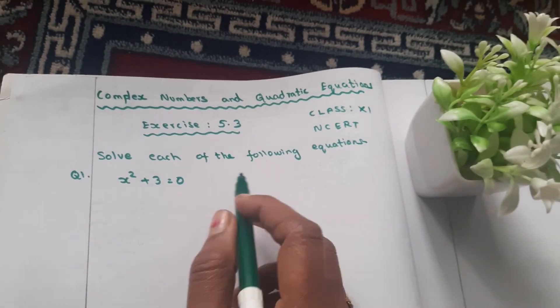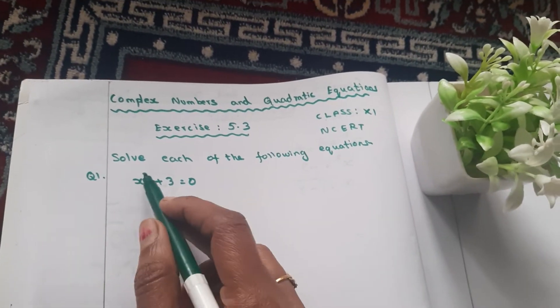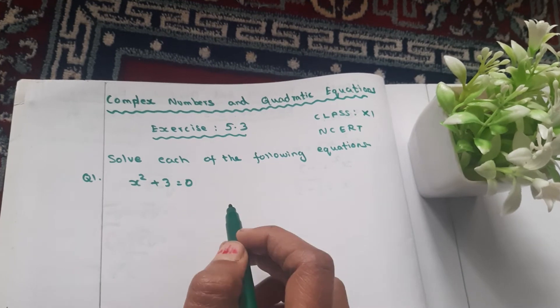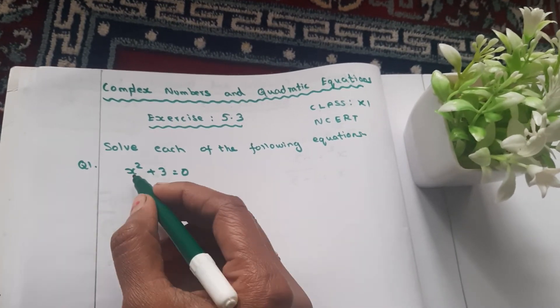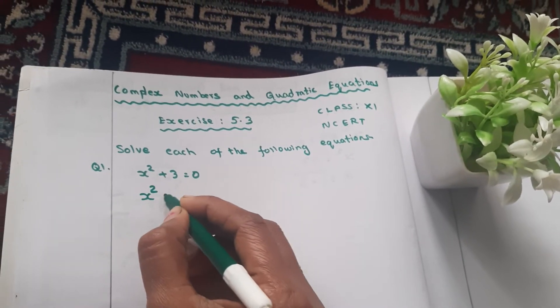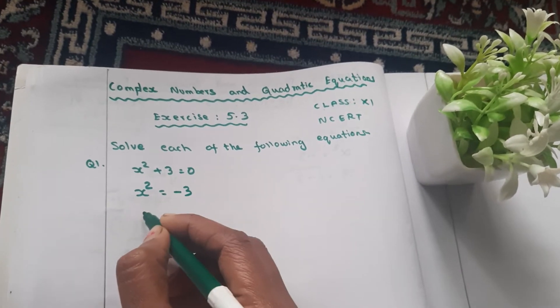Solve each of the following equations. The first equation: x squared plus 3 is equal to 0. We will solve it. So x squared plus 3 is equal to 0, then x squared is equal to minus 3.